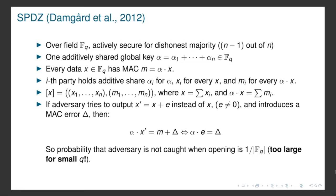The idea in the SPDZ protocol is these message authenticated codes. We have one global key where each party holds a share for the global key, so the i-th party holds α_i. Then we have the data we are computing on — x could be an input for some party — and we have a MAC, a message authenticated code. The idea is that this MAC should be the global key times the data. We use additive secret sharing for the key, the data, and the MAC: we sum up the shares α_i to get α, the x_i to get x, and the m_i to get m.